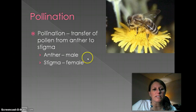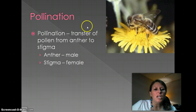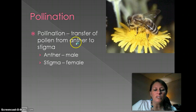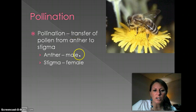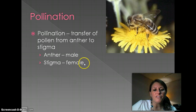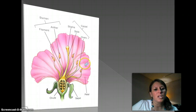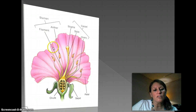Now that we're on plants, let's look at pollination. Pollination is the transfer of pollen from the anther, which is the male reproductive structure, to the stigma, which is the female reproductive structure. Let's go to the classic cross-section of a flower and point out a few of the parts.